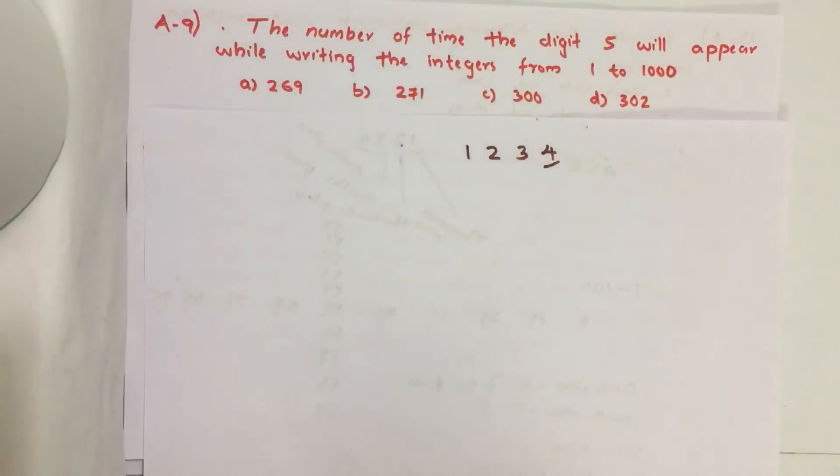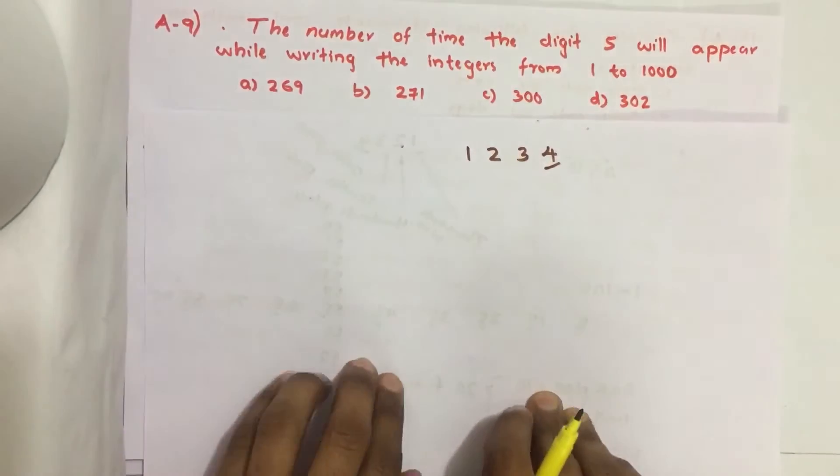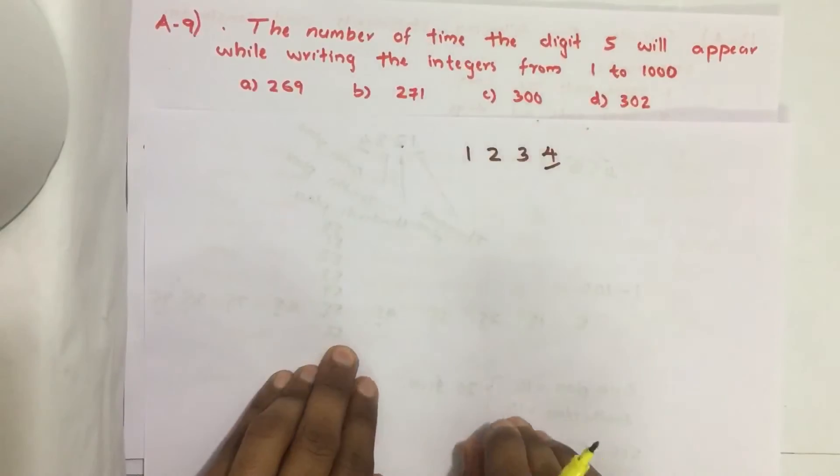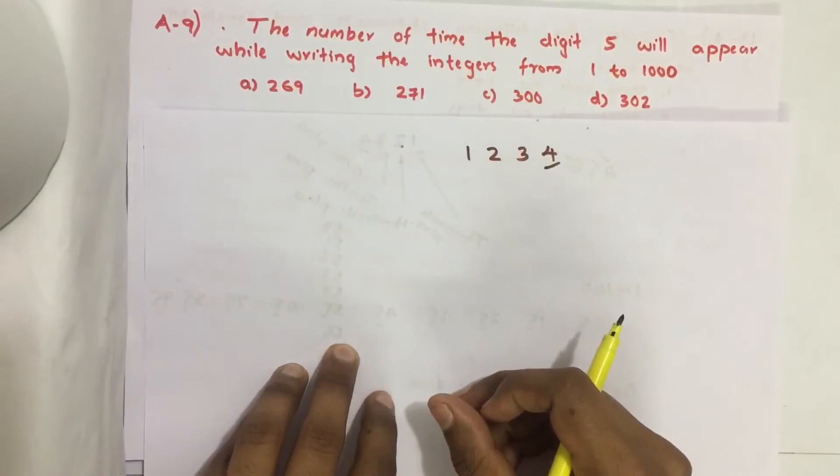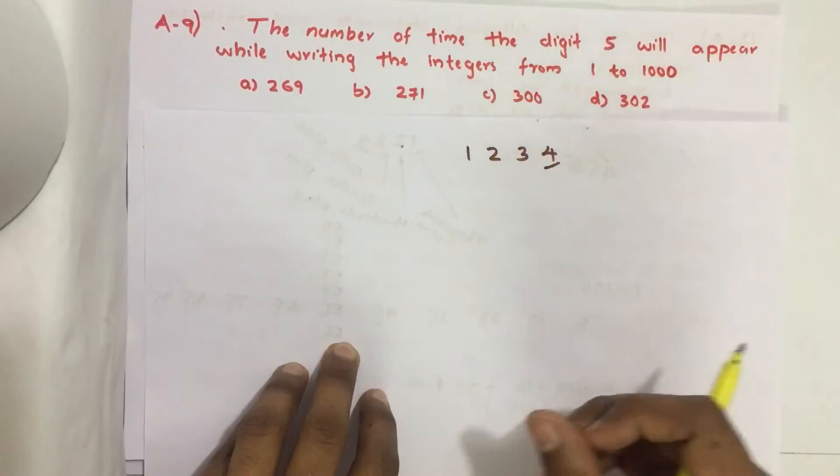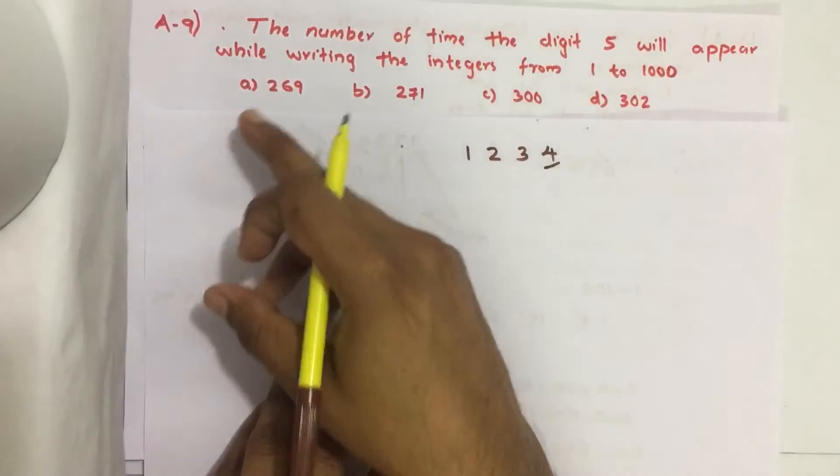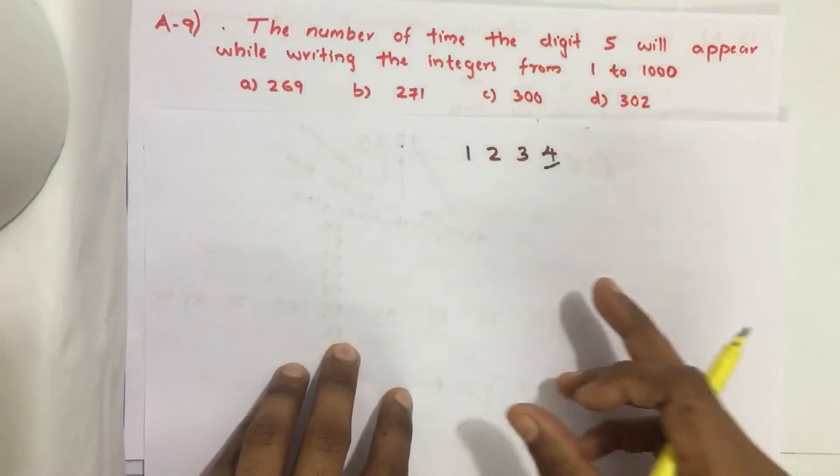Hello everyone. In this lesson we will start solving previous year questions. For that I have chosen last year, that is 2019 CSAT series A question paper. Let us solve the first math question from this paper, that is question number 9. The number of times the digit 5 will appear while writing the integers from 1 to 1000, and there are 4 options given.